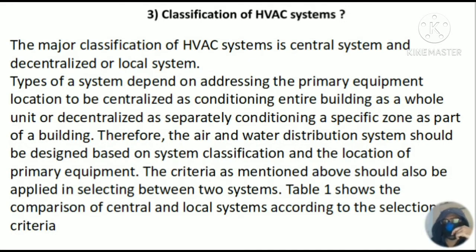There are two types of systems based on primary equipment location. First is central — central conditioning for the entire building. Second is decentralized — separate conditioning for a specific zone or part of the building, as per the requirement. We will see the difference between both.